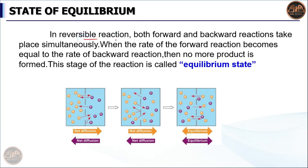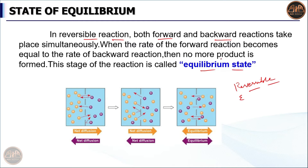First, let's talk about state of equilibrium in relation to reversible reactions. In a reversible reaction, both forward and backward reactions take place simultaneously. When the rate of the forward reaction becomes equal to the rate of the backward reaction, no more product is formed — this stage is called the equilibrium state. In a reversible reaction, two types of reactions are taking place.